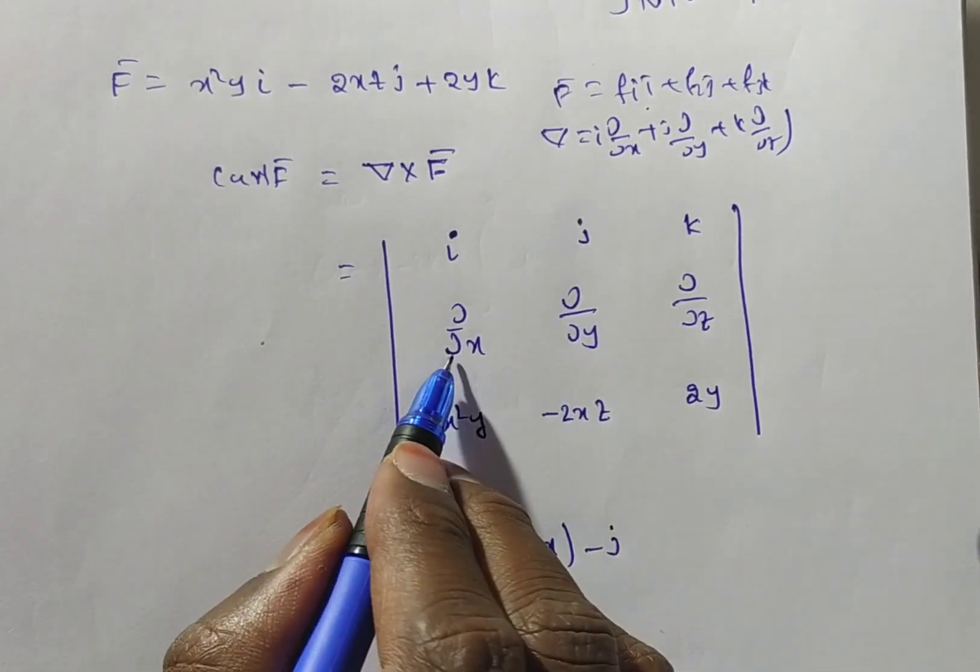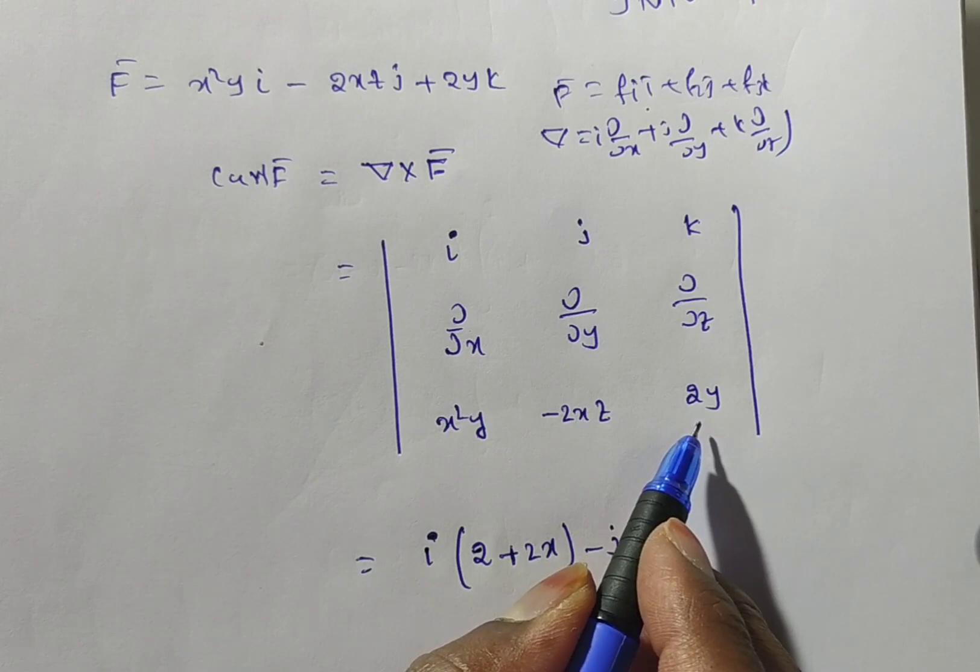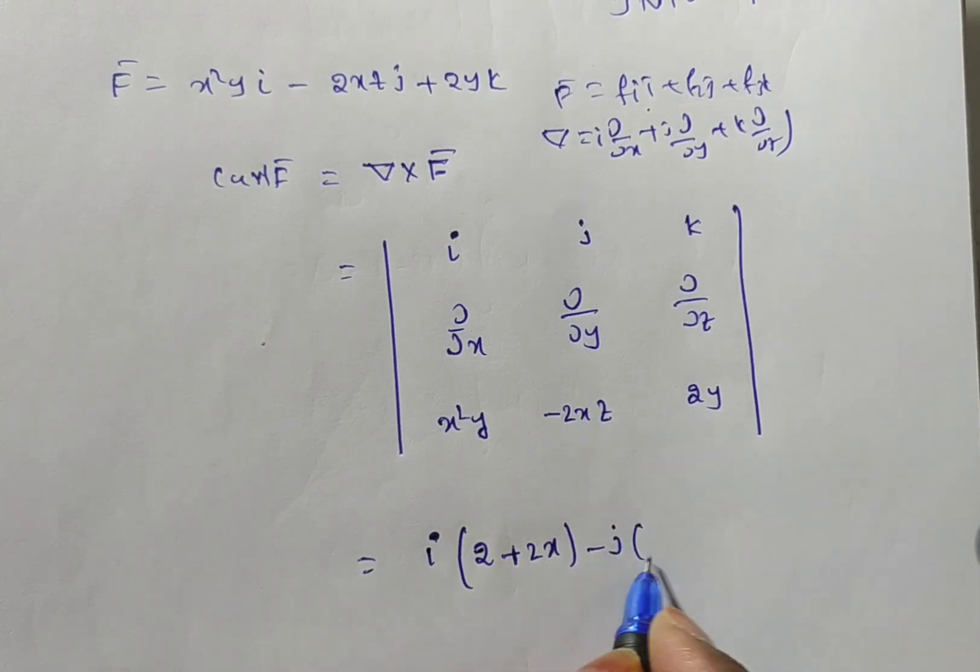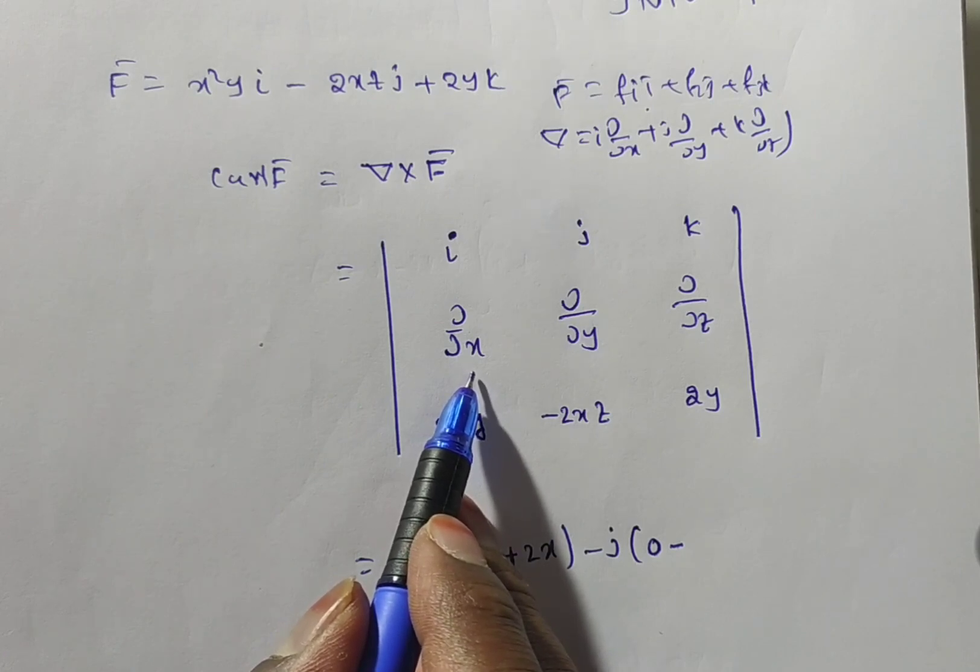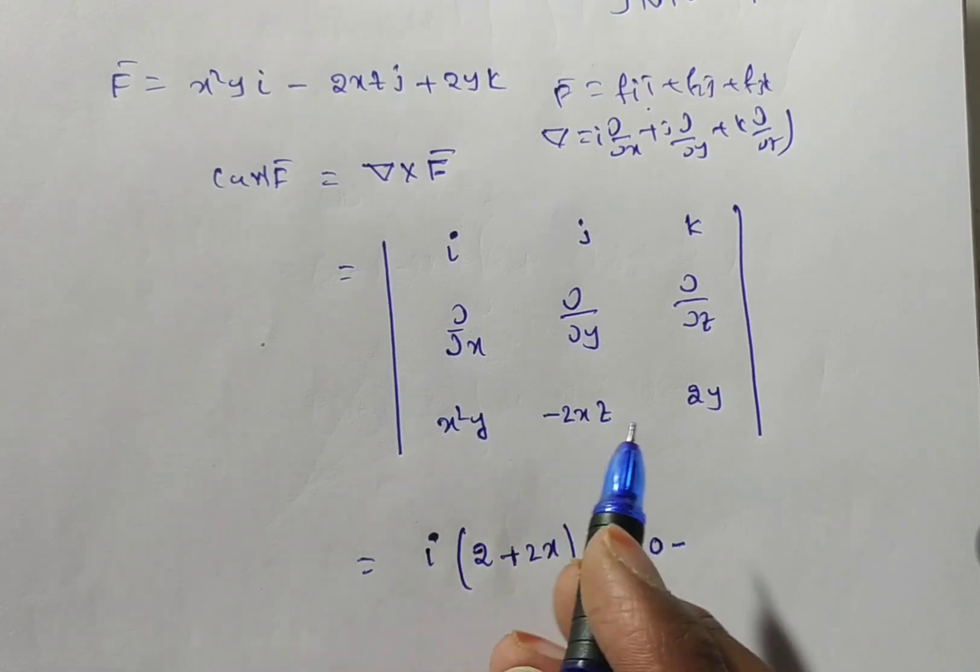Minus j times, with respect to x, is there any x term here? No, independent of x. That is why it is zero. Partial derivative, while doing the partial derivative with respect to x, all other variables we have to treat as a constant only. That is why it is zero.